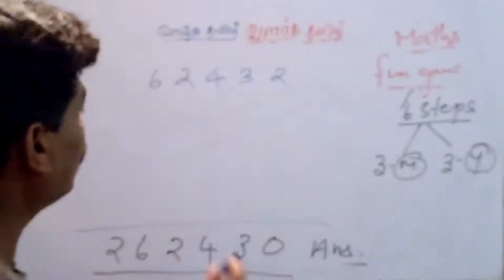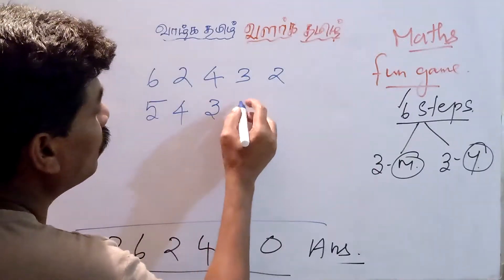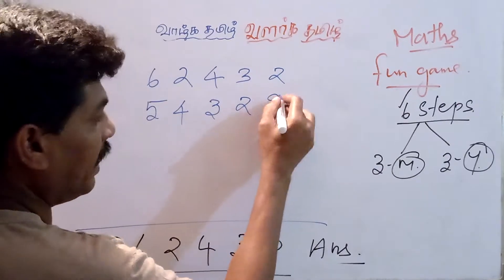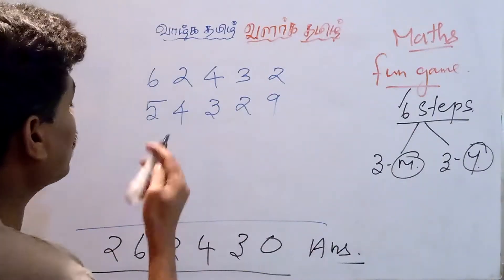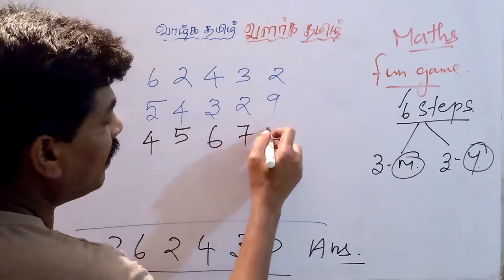Say some numbers: 5, 4, 3, 2, 9. And my numbers are 4, 5, 6, 7, 0.